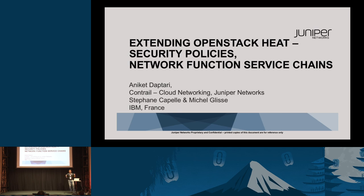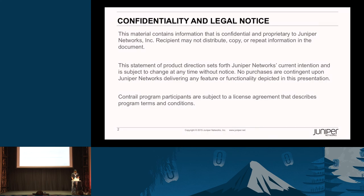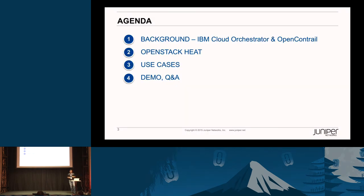I'm hoping that you have heard about security policies and network function service chains. In case you haven't, I'll give a little bit of an idea of what these network function service chains are. We'll keep the agenda simple: give a quick background of the products we are talking about, I'll focus on OpenContrail, and my colleagues from IBM will talk about IBM Cloud Orchestrator. We'll cover OpenStack Heat, network function service chaining, use cases, and a demonstration. If we have time, we'll also do Q&A.